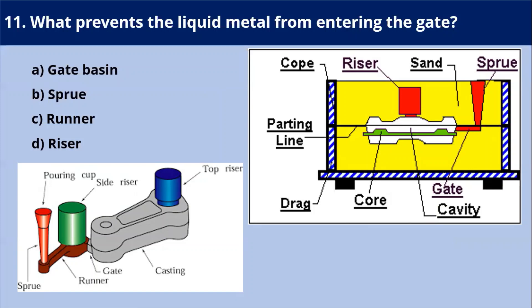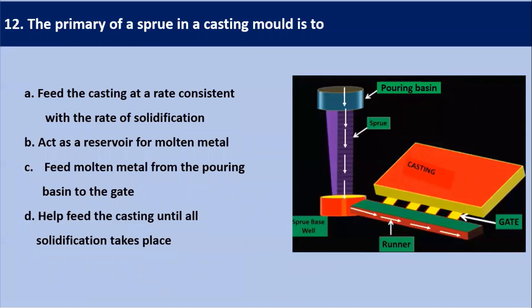Next question: what prevents the liquid metal from entering the gate? The gate basin plays a very vital role in stopping the liquid metal flow. The gate basin does not allow the turbulent flowing liquid metal from entering into the gate. Our answer is — gate basin.